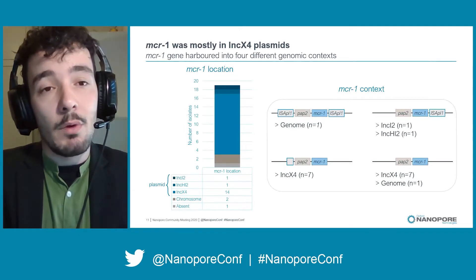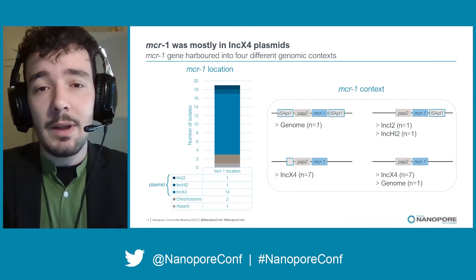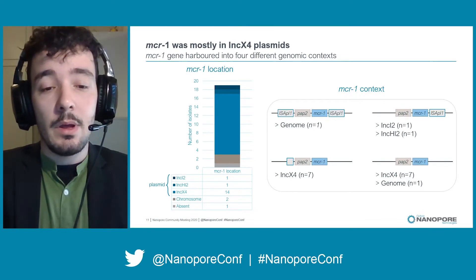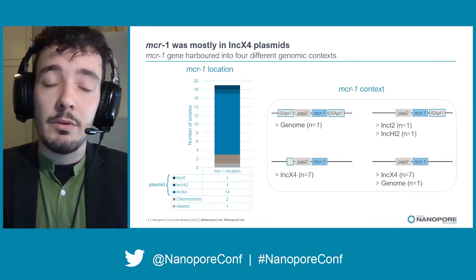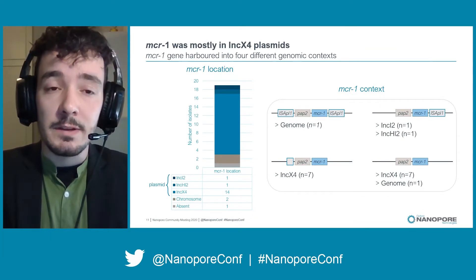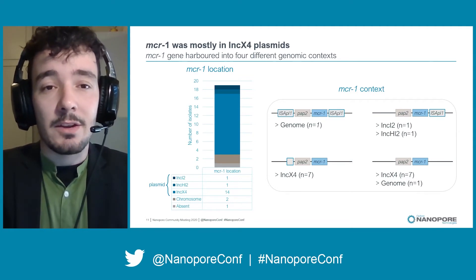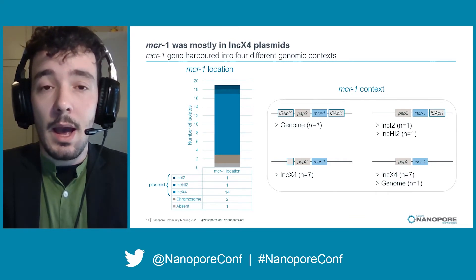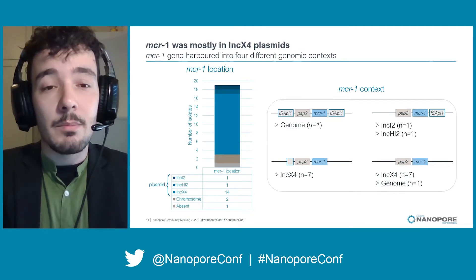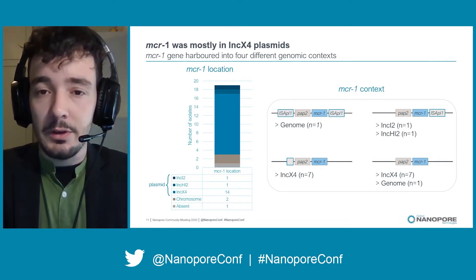Regarding MCR1 gene characteristics, we could differentiate two locations: chromosomes and plasmids. Two samples harbored the gene inserted in the chromosome and the rest had the gene present in a plasmid, mainly INC-X4. One of the samples presented two copy plasmids, INC-X4 and INC-HI2. However, there was one sample in which we didn't identify the gene, even though MCR1 PCR resulted positive.